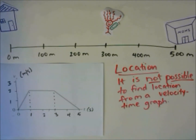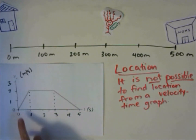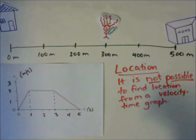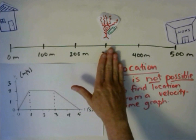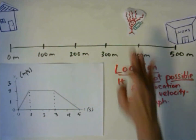The last thing to discuss for velocity-time graphs is location. It is not possible to use one of these graphs to find the location of an object, because we don't know where they started. Even though we can find how far they've gone, if Francine started at 300 meters and we know she's gone 100 meters, she could end up in many different places depending on where she started. We would need a position-time graph to know the location.